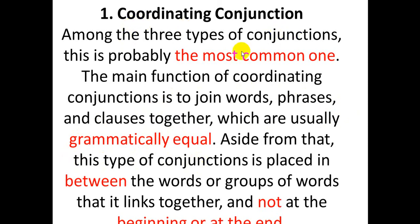The first type is coordinating conjunction. A coordinating conjunction is commonly used to join words, phrases, and clauses that are grammatically equal — for example, two equal grammatical units like past tense or future tense sentences.